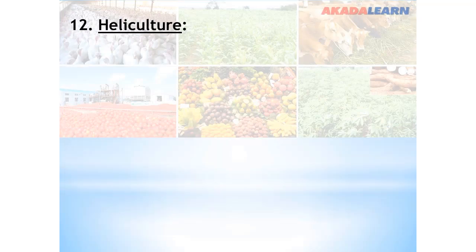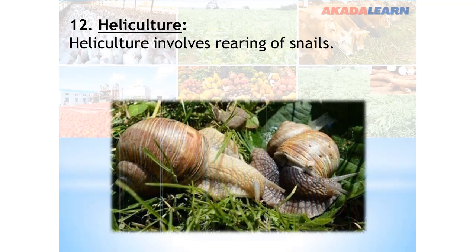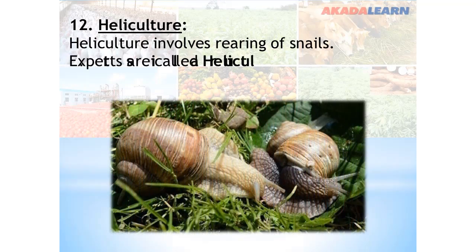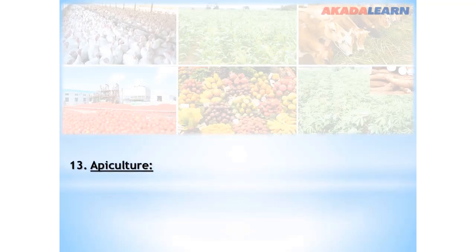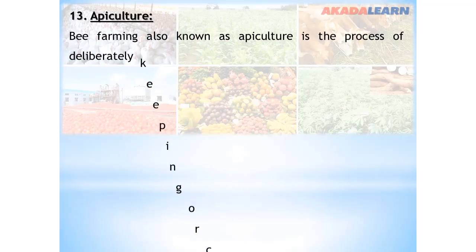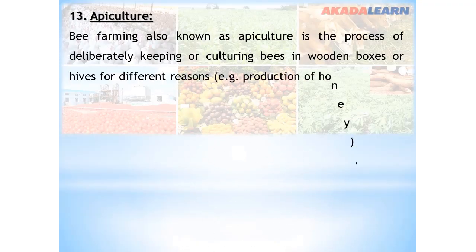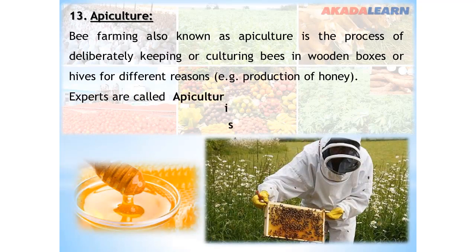We have heliculture. Heliculture involves the rearing of snails. Experts are called heliculturists. We also have apiculture. Apiculture is bee farming — it is a deliberate process of keeping bees in wooden boxes or hives for different reasons. The expert is known as an apiculturist.